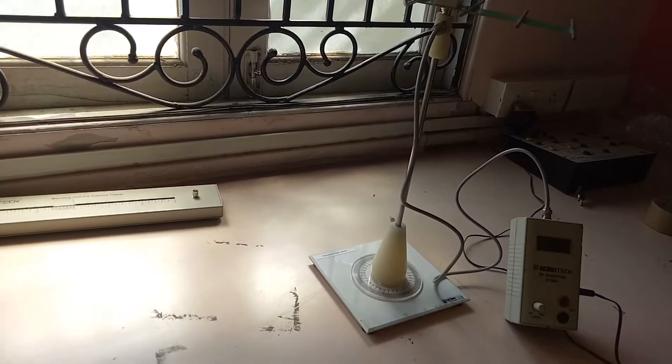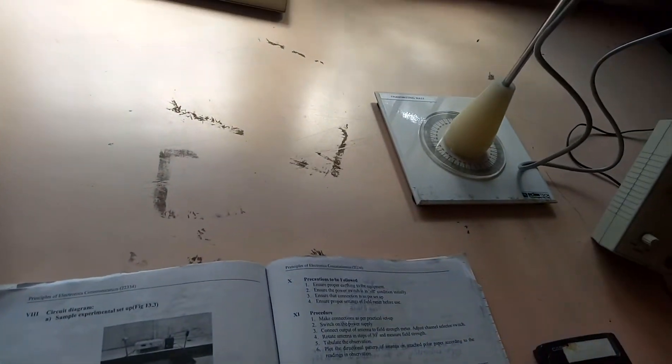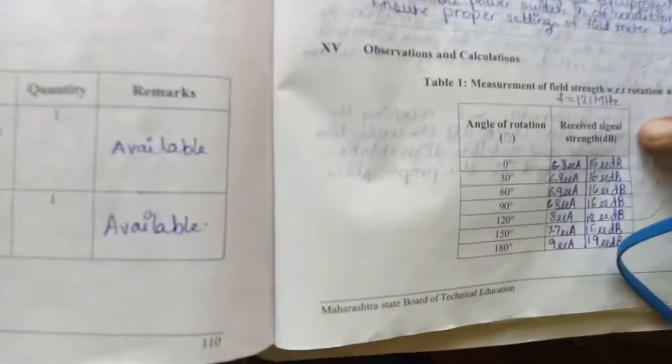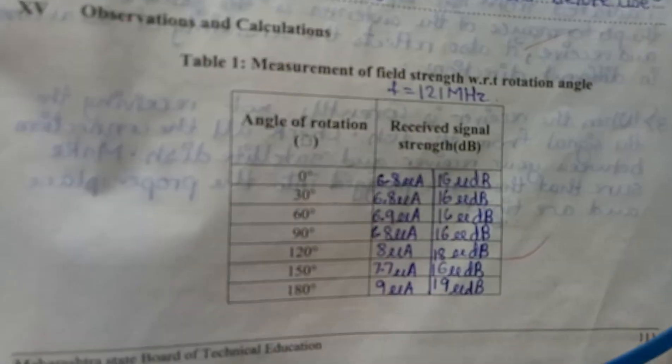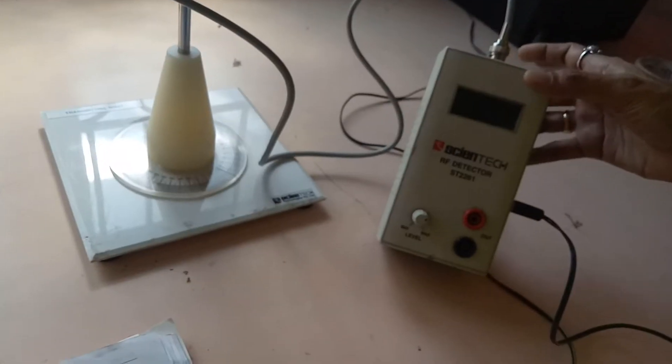We will start the practical now. Here we are going to fill the observation table. The observation table has angle of rotation and received signal strength.